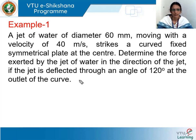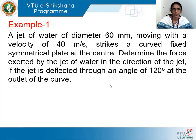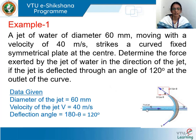We need to understand what type of problem is given and what information is provided in the question. First we write those things, then we select the appropriate equation, substitute the values, and solve for the answer. This is the case of a symmetrical curved plate and the jet is striking the vane at its center. Nothing is mentioned about the velocity of the vane, so we assume the vane is stationary. The problem is that of a jet striking a curved vane at its center with the vane being stationary.